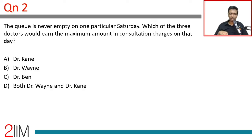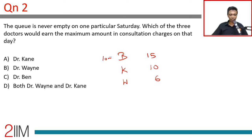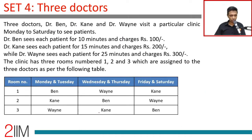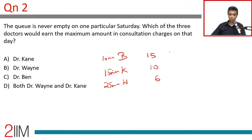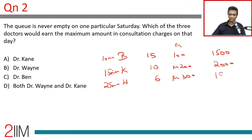The queue is never empty on one particular Saturday — which of the three doctors would earn the maximum amount? In that scenario, Ben sees 15 patients at 100 rupees each = 1500 rupees. Cain sees 10 patients at 200 rupees each = 2000 rupees. Wayne sees 6 patients at 300 rupees each = 1800 rupees.